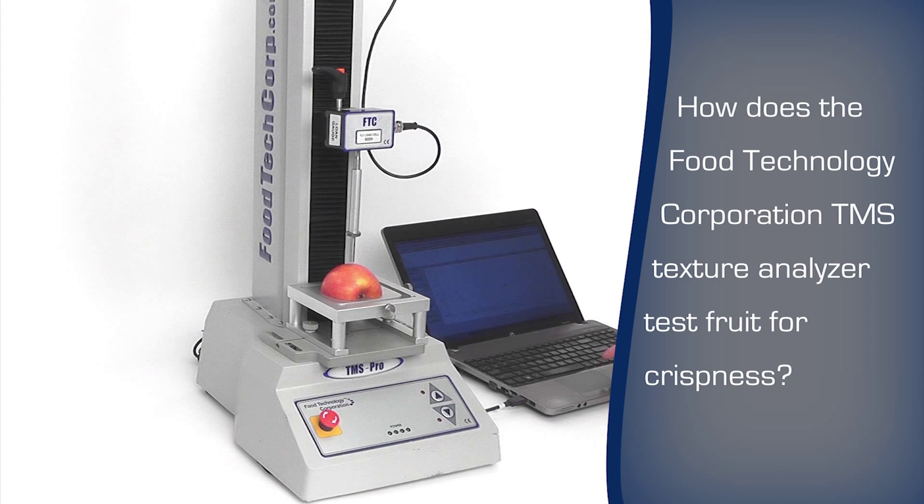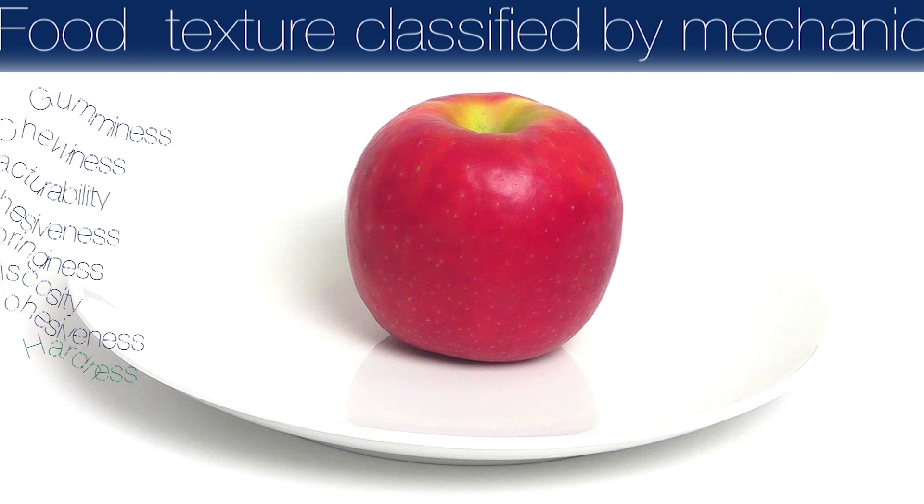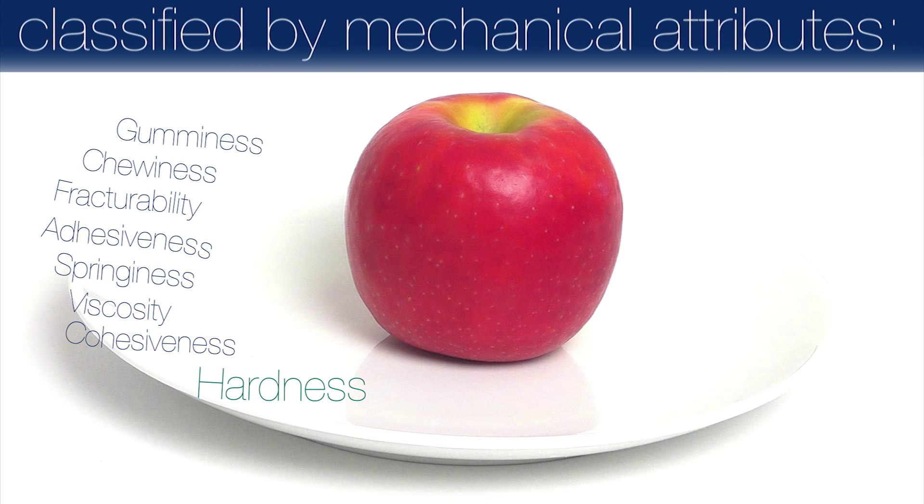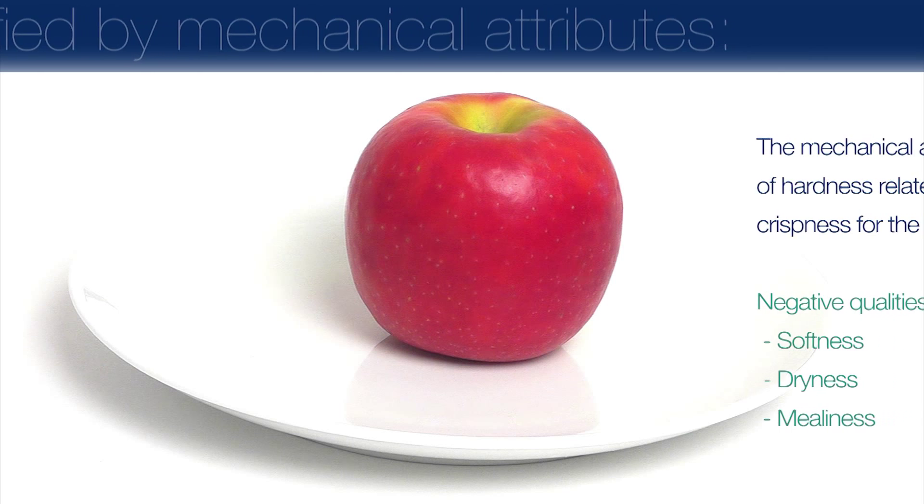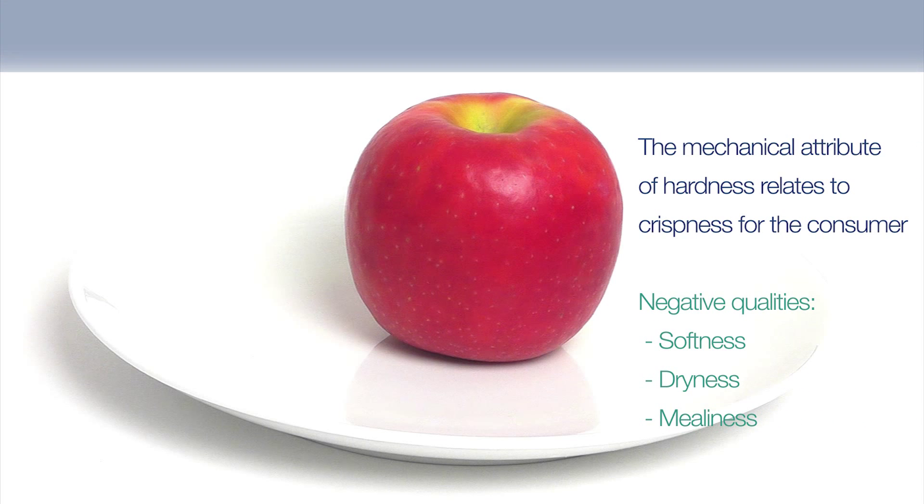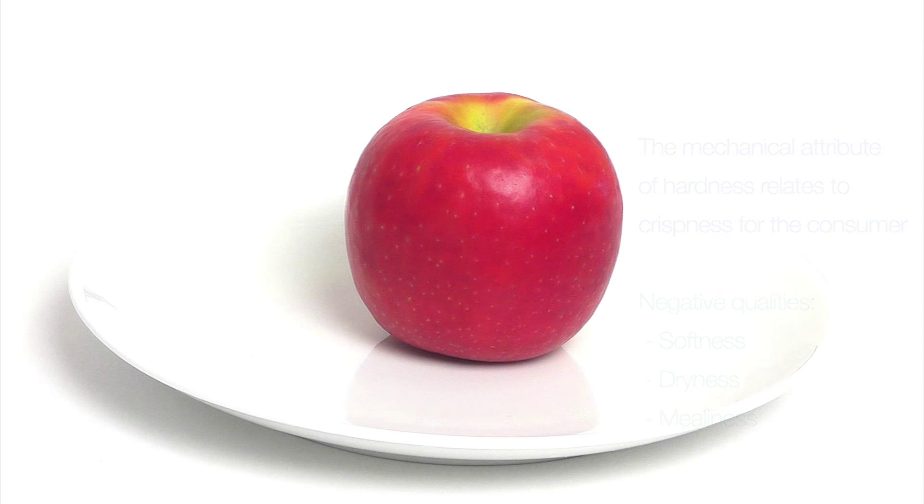The FTC texture analyzer can test an apple for crispness. Food texture can scientifically be classified by a number of mechanical attributes: hardness, cohesiveness, viscosity, springiness, adhesiveness, fracturability, chewiness and gumminess.